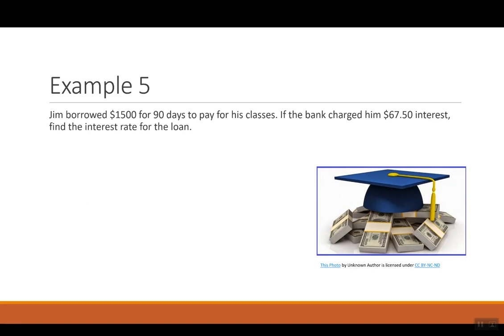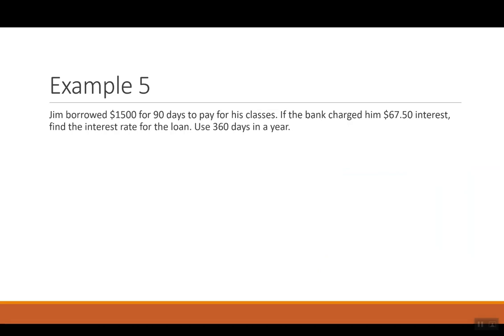Jim borrowed $1,500 for 90 days to pay for his classes. If the bank charged him $67.50 interest, we will find the interest rate for the loan. So we're going to use 360 days in a year for this one. So I was $67.50, P was $1,500, and T was 90 over 360, which I can reduce to 1 fourth or you can leave it if you want to leave it.